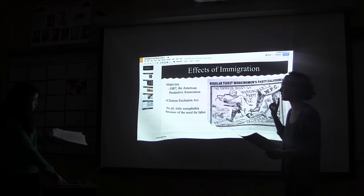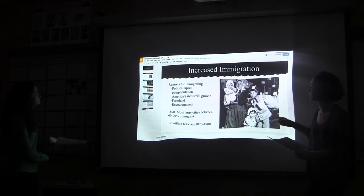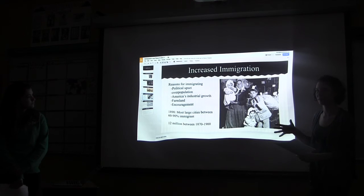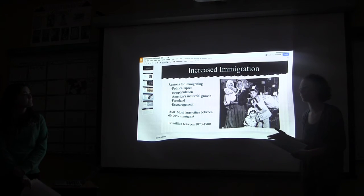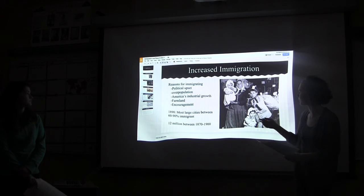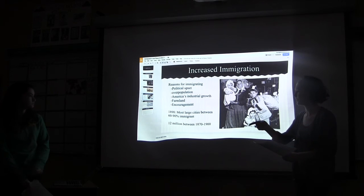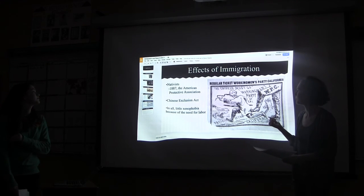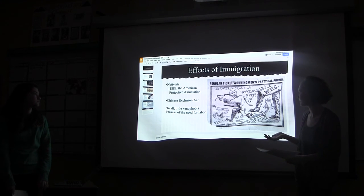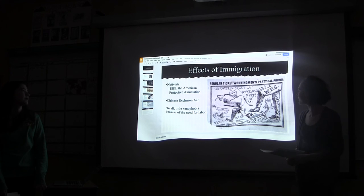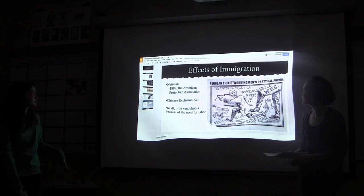The presentation shows a photo of a migrant family from Italy at Ellis Island, representing the new wave of Italian immigrants who arrived in large numbers in the late 1800s. There is also a cartoon from the working men's party showing anti-Chinese sentiment — essentially depicting the message that Chinese people should be expelled from the country.